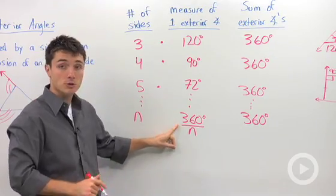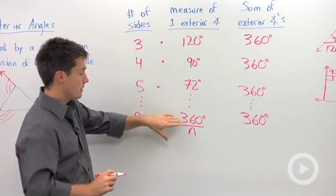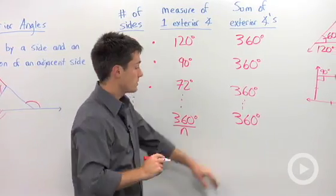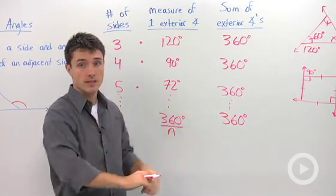First one, if you want to find the measure of one exterior angle in a regular polygon, 360 divided by n. If you want to find the sum of all of the angles, it's 360 degrees no matter how many sides you have.